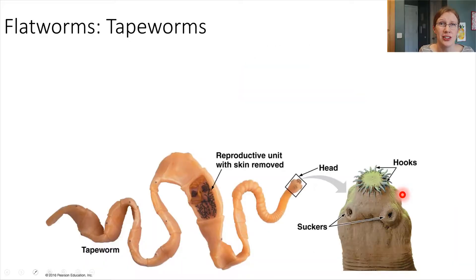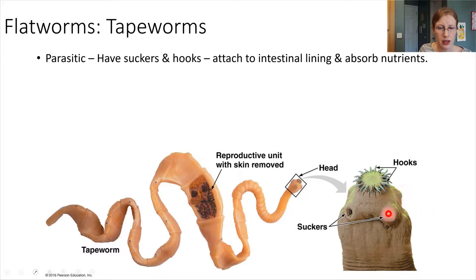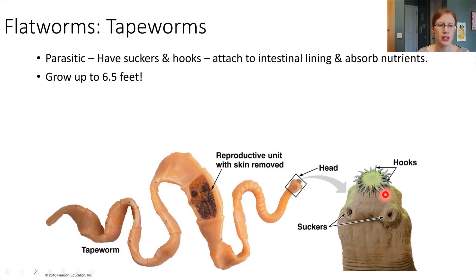Another type of parasite is the tapeworm. Tapeworms are another example of a flatworm, and they are also parasitic. They also have suckers that allow them to stick, and on top of that they have hooks. Tapeworms live in the intestines, attach to the intestinal lining, and absorb nutrients from the intestines. Tapeworms can grow quite long — up to six and a half feet inside the intestines — and since the intestines are really long, it's easy for them to fit.